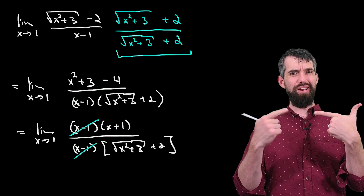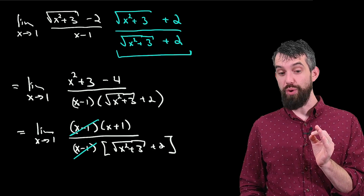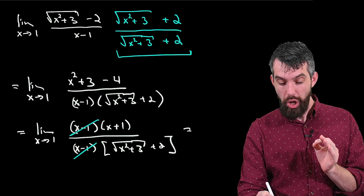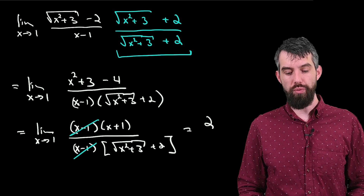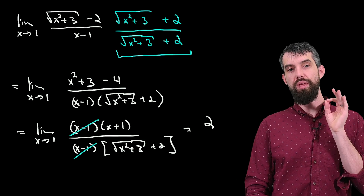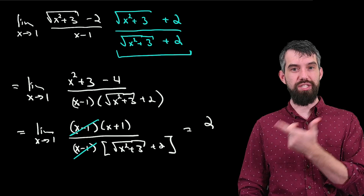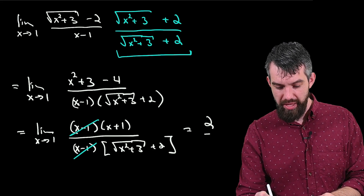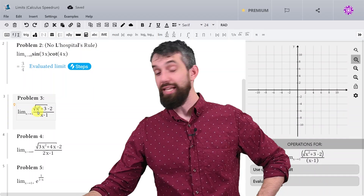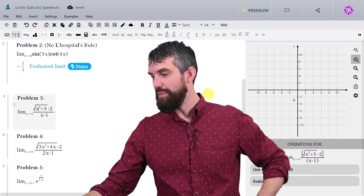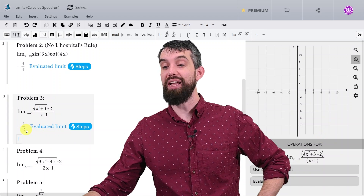I've eliminated my 0. Now plugging in x = 1: on top, x plus 1 gives 2. On the bottom, square root of 4 is 2, plus 2 gives 4. So the answer is 2 over 4, which equals 1/2. Let's check it — I click evaluate the limit and I get 1/2 once again.